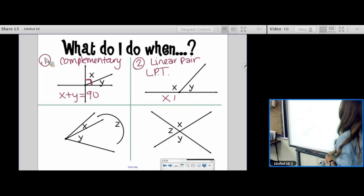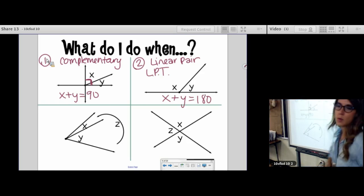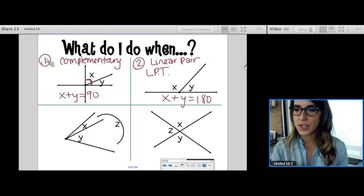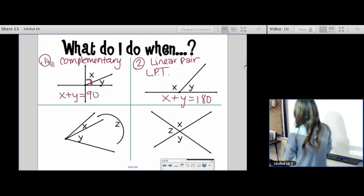So in this one, I would add these to equal 180. I would not set them equal. Their sum is 180 because they are supplementary. Okay, number three.